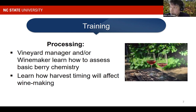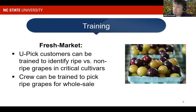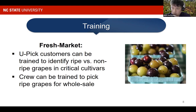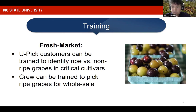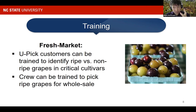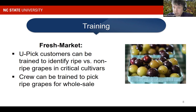You also learn how harvest timing will affect winemaking. Those are two very important parts in the processing vineyard and the fresh market vineyard. On the fresh market side, it's important to determine ripe versus unripe fruit, and it allows you to meet standard pricks and clamshell requirements. It also allows you to train your crew if you have a wholesale operation, or to train your customer to identify ripe versus non-ripe fruit.